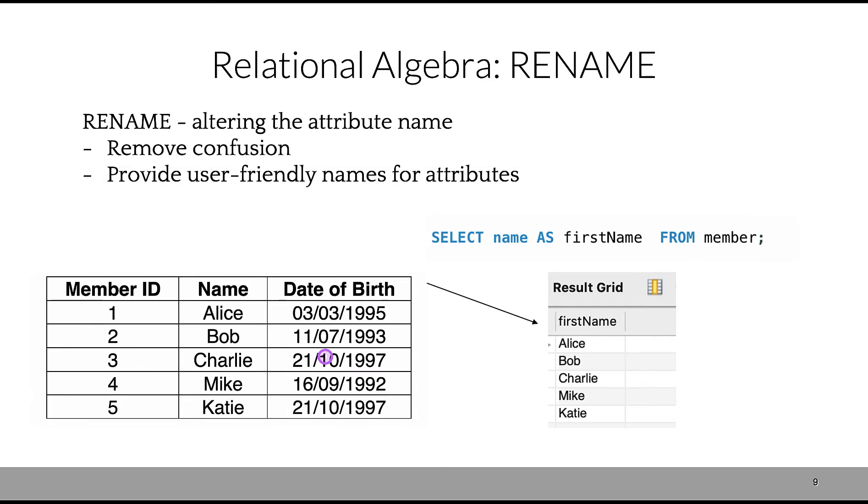Next is rename, when we're altering the attribute name. Sometimes it just provides user-friendly names for attributes instead of abbreviations. We could also remove confusion—some tables may have the same name for attributes. We're using AS to provide an alias for the attribute name. In this case, I wanted to create an alias for 'name' and name it as 'first_name.'